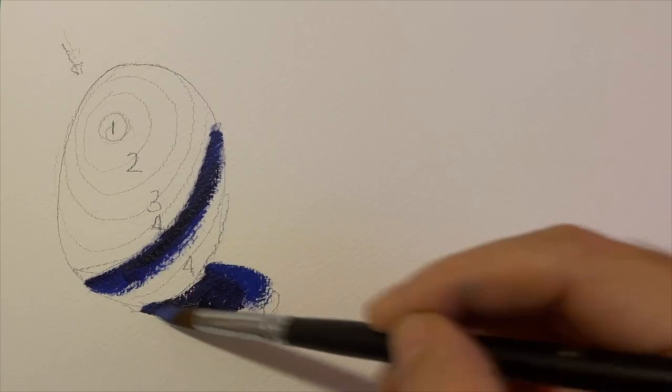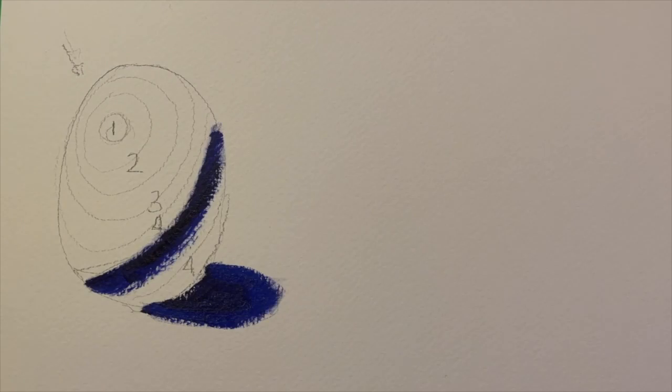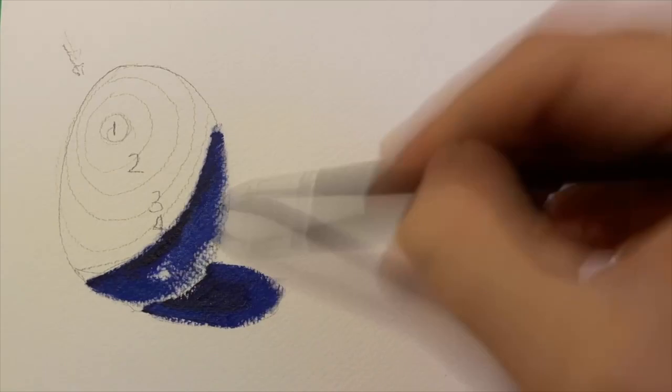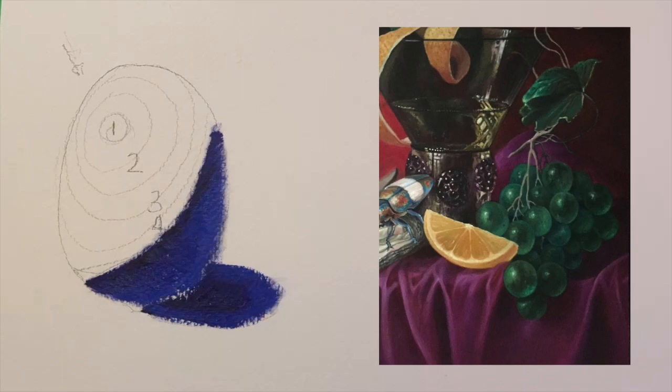Starting out with the darkest tone, the outside of the shadow is slightly lighter than the inside of the shadow closest to the object. It's a four right at the bottom of the object because that's reflected light.